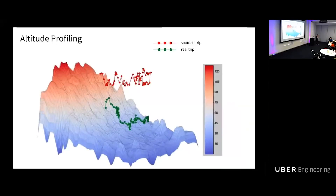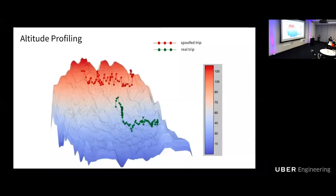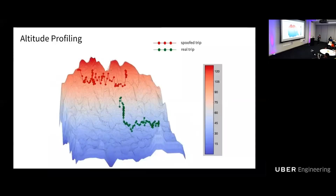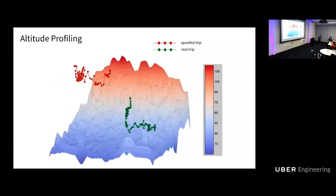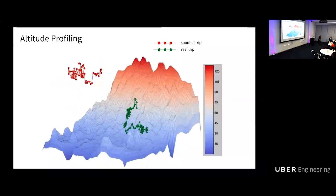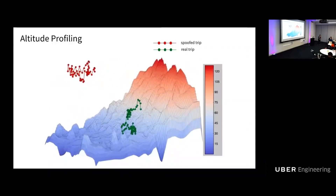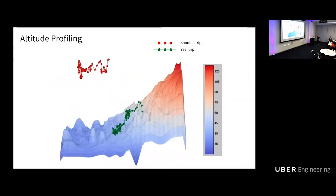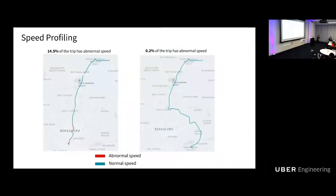The first technology we developed is to leverage all of Uber's historical trip data to build an altitude profile across the world. A real trip's altitude travels along the earth's surface, whereas a fake trip may fly through the sky or travel underground. We do the same thing for speed — we developed a speed profile using all historical trip data for every hour, every day, and all road segments worldwide. For fake trips, a large percentage of speeds shown in red are abnormal, but for real trips this percentage is very small.